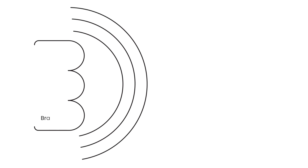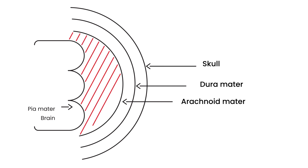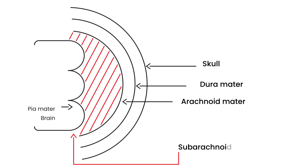This part is the brain. The layer that covers the brain is called the pia mater. This layer here is the arachnoid mater, and then this here is the dura mater. And then this layer here is just the skull. The area right here is where the bleeding occurs, and that area is known as the subarachnoid space. So the subarachnoid space is where the bleeding occurs.